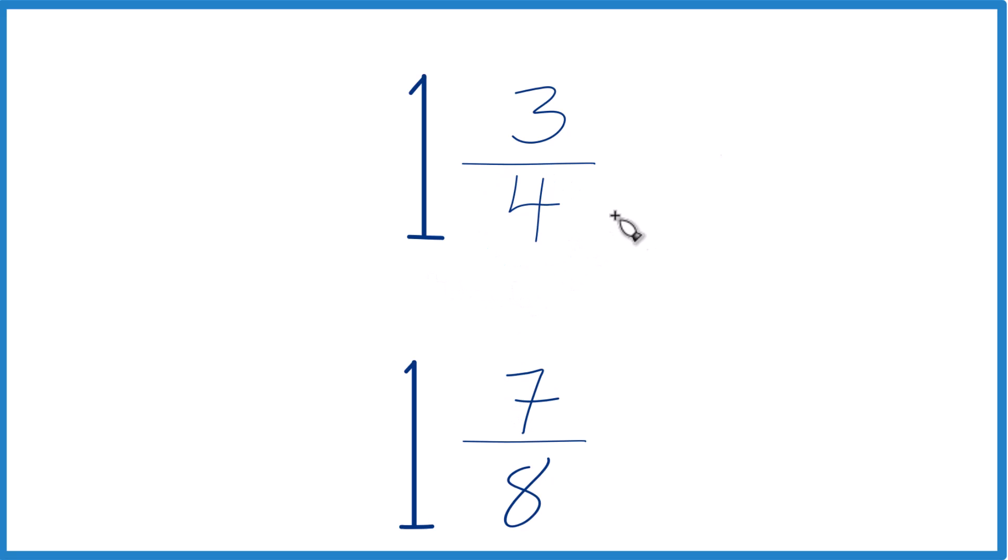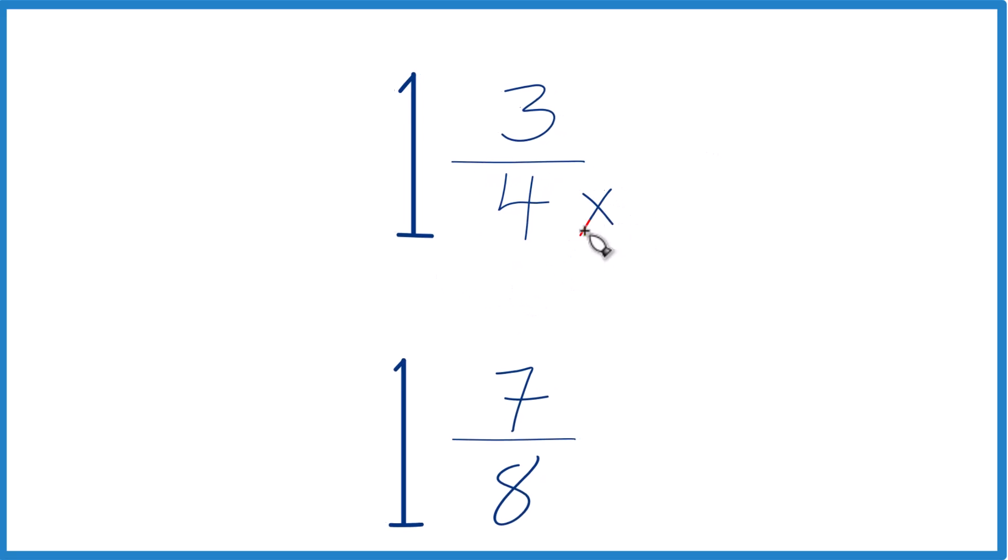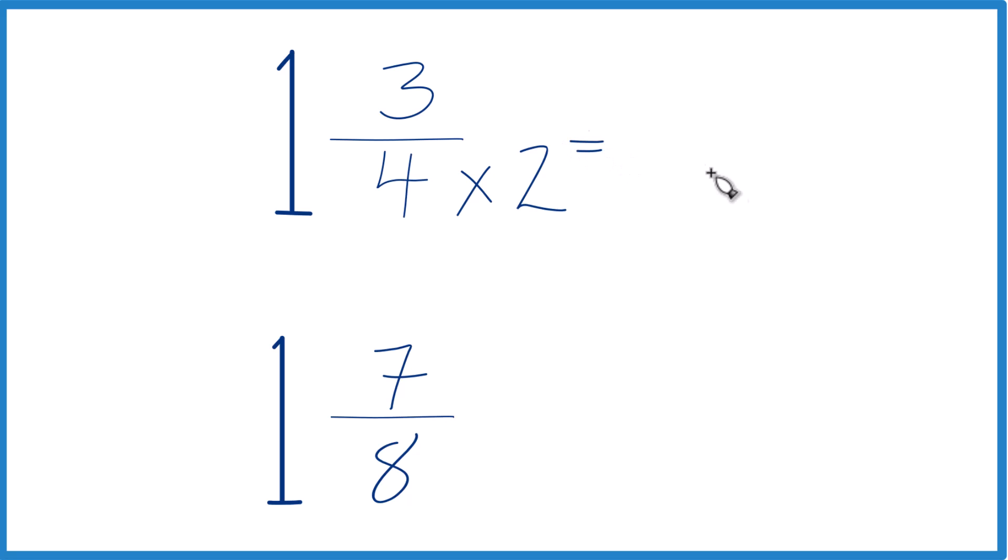So let's do this. Let's multiply 4 times 2, because 4 times 2 is 8, and over here we already have 7/8, so we're just going to call this 7/8.